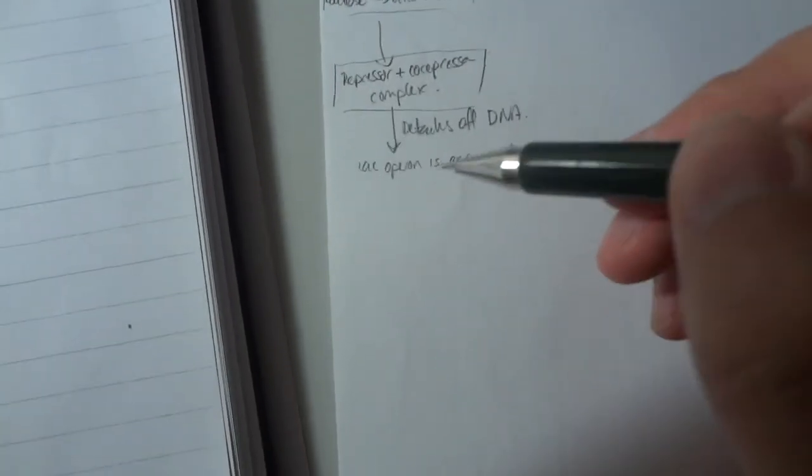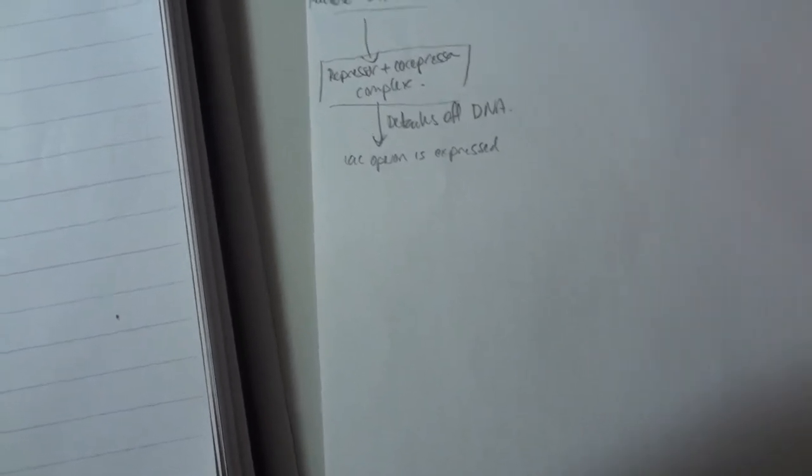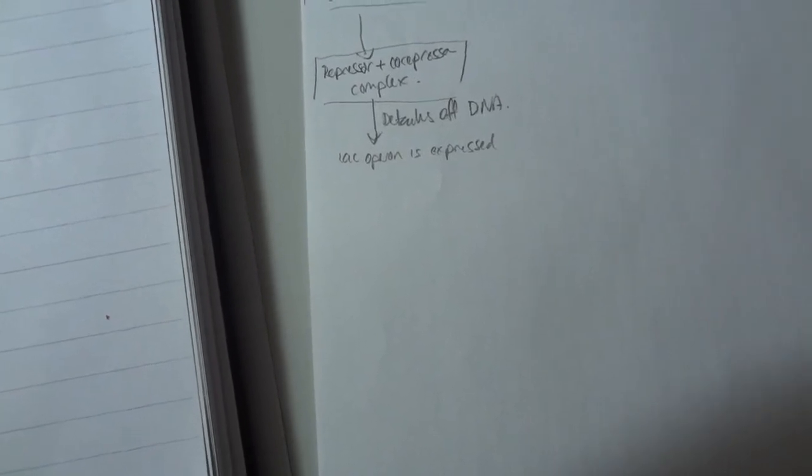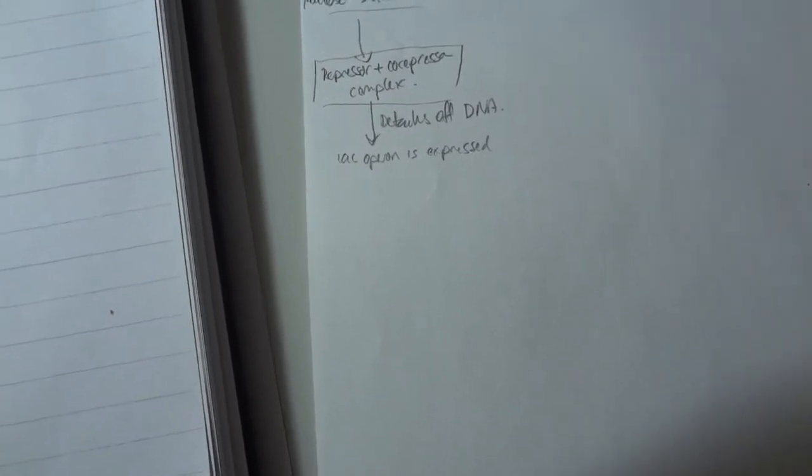However, lac operon's promoter consensus sequence has a low match with RNA polymerase, meaning that RNA polymerase doesn't really attach very strongly to it. So the lac operon is expressed.